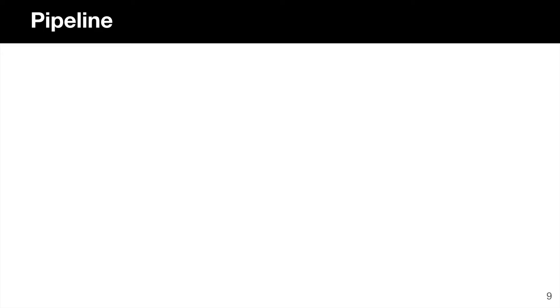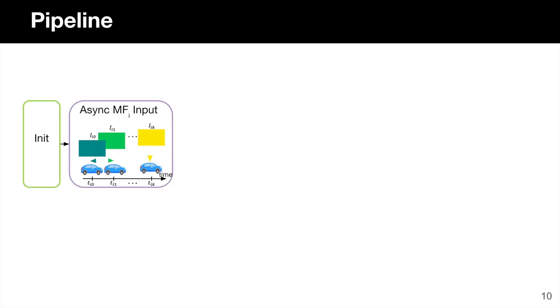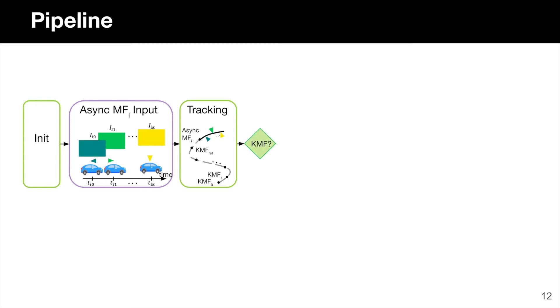We integrate our concept of asynchronous multi-frames and the continuous-time motion model into a traditional feature-based indirect SLAM system. The AMV SLAM system works as follows. After initialization, where we initialize the control point of the first multi-frame and observed map points, we take each incoming asynchronous multi-frame as input and perform tracking to estimate the motion model parameters, or equivalently the robot trajectory, for the new multi-frame. We then perform a check to determine whether to promote the new multi-frame to a key multi-frame. For computational efficiency, we select a subset of all multi-frames as key multi-frames and only perform local mapping and loop closing on this subset.